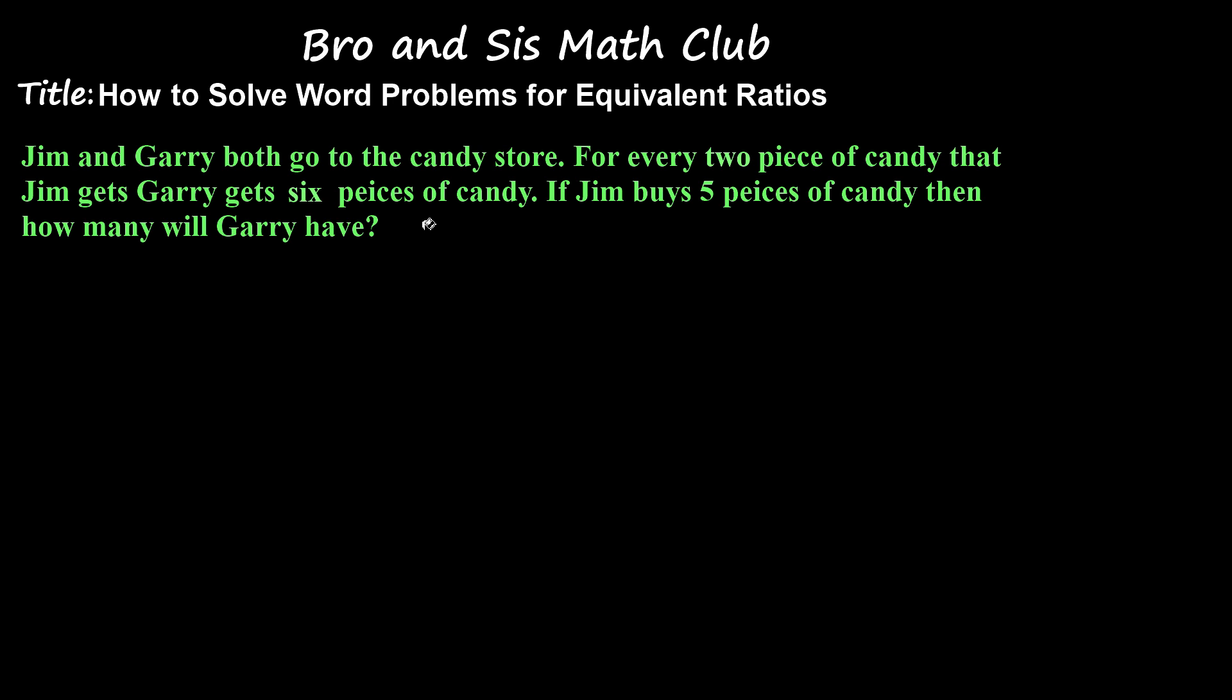So here's a word problem. Let's read it very carefully and solve. It says Jim and Gary both go to the candy store. For every two pieces of candy that Jim gets, Gary gets six pieces of candy. If Jim buys five pieces of candy, then how many will Gary have?